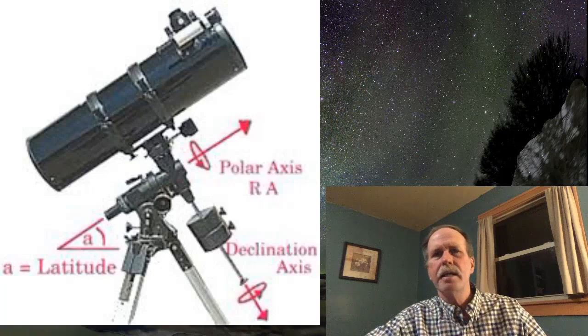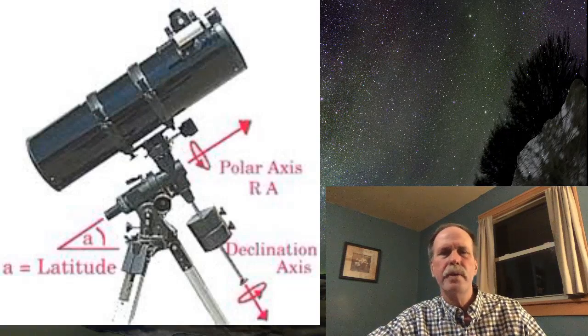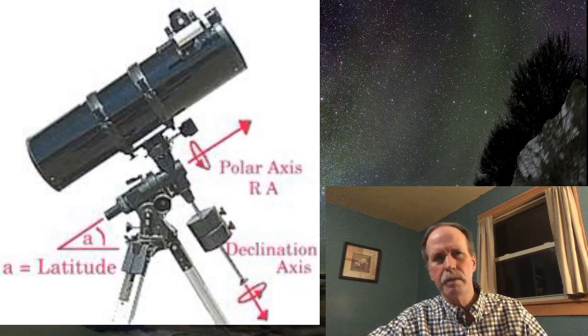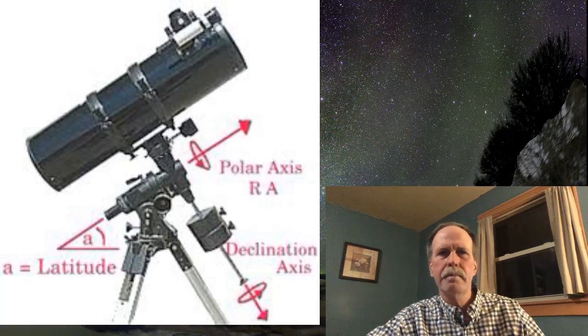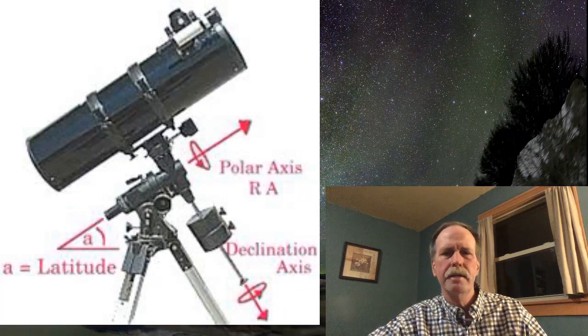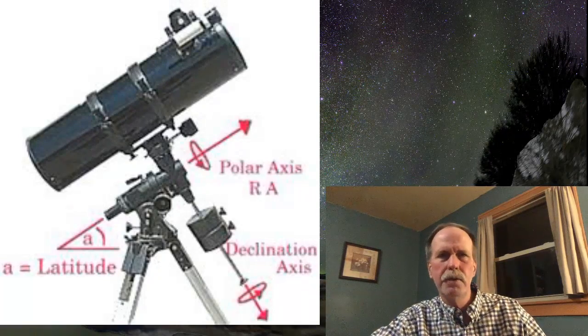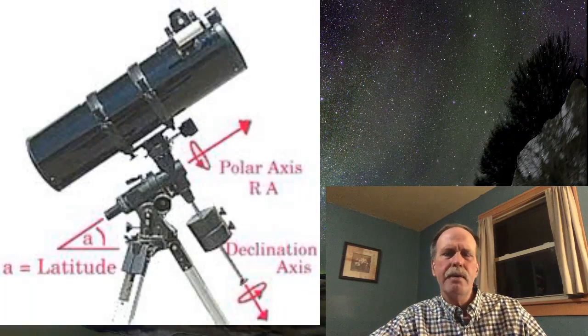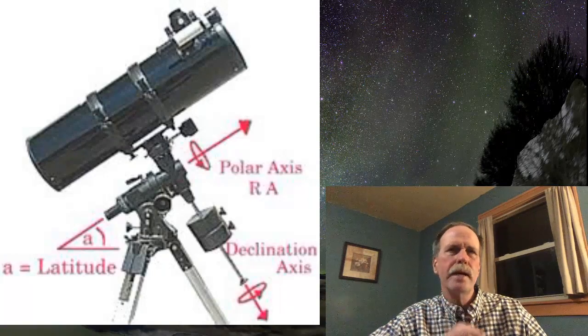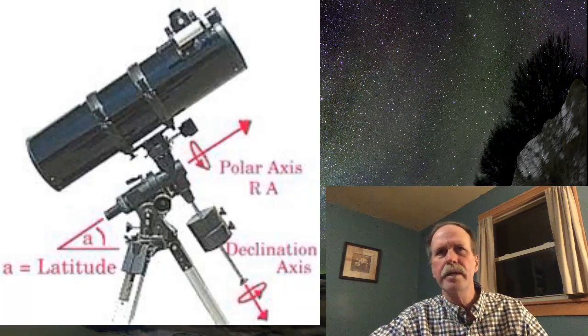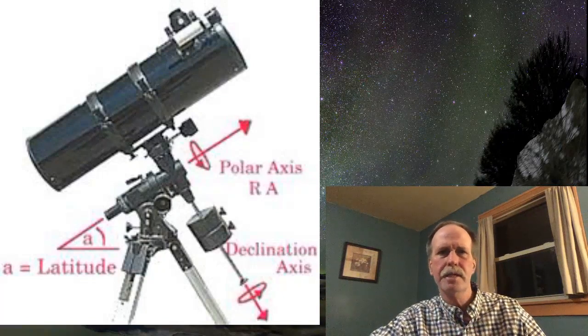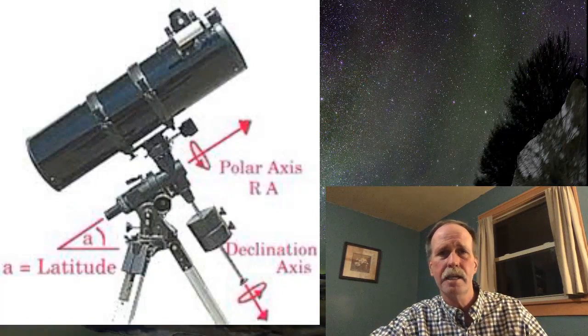In order to have a basic understanding of how a star trail is formed, we have to understand how an equatorial mount works. This is a photograph of a German equatorial mount, which is pretty standard. You'll see something there called the polar axis. That red arrow is pointed directly at the northern or the southern celestial pole. We're going to discuss this in terms of the northern celestial pole because I live in the United States.